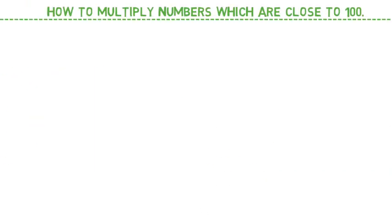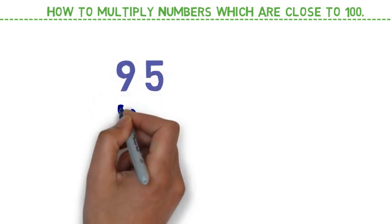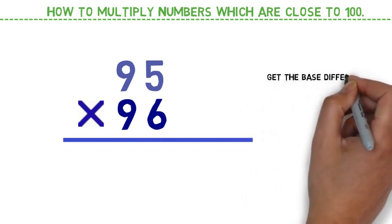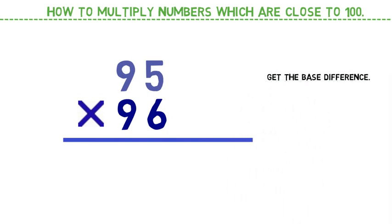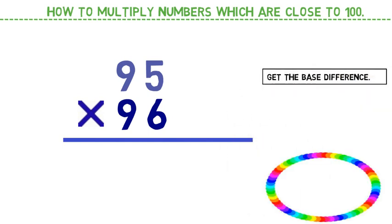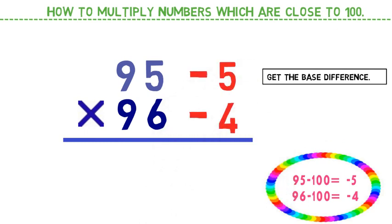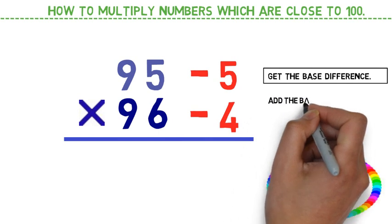Let's solve the first question first, which is 95 × 96. This is gonna be a 3 step process. In step 1, we need to find out the base difference. The base is 100, so the base difference is the number minus 100. The first number is 95, minus 100 equals minus 5. The second one is 96, minus 100 equals minus 4. So the base difference comes out to be minus 5 and minus 4.